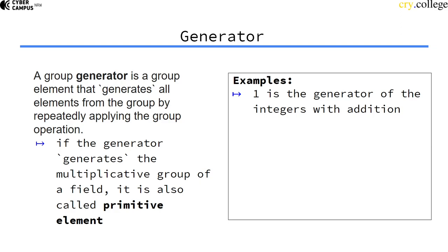One is the generator of the additive group of integers because by repeatedly applying the group operation to itself, we get all the integers.